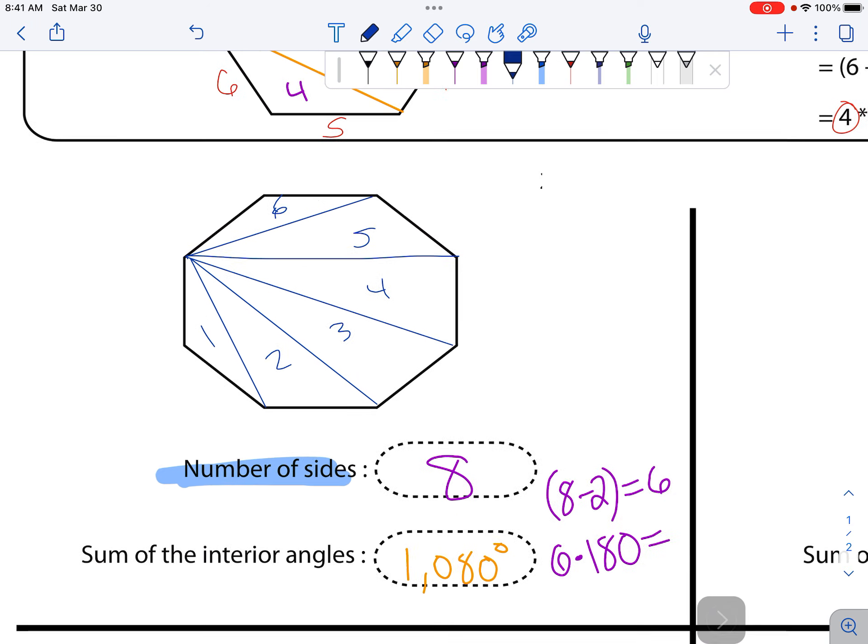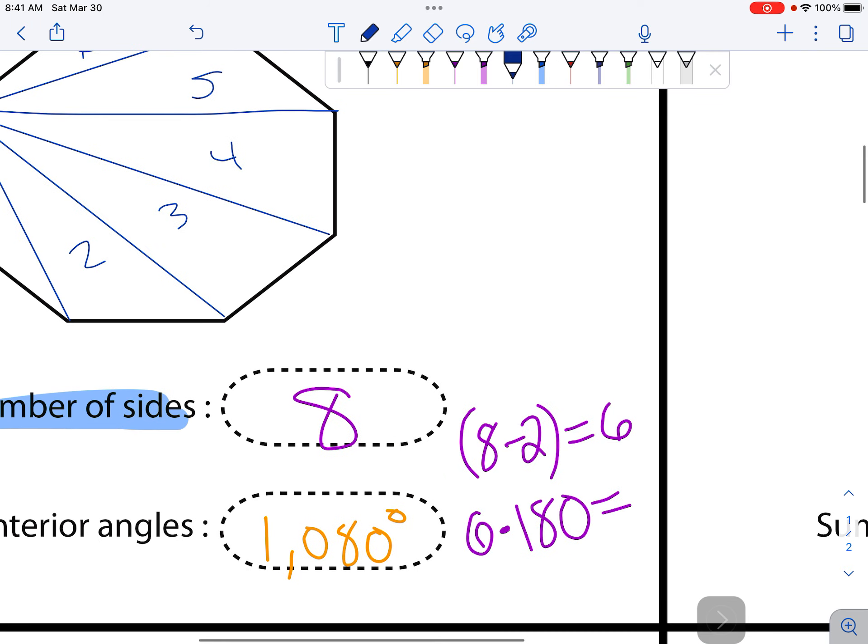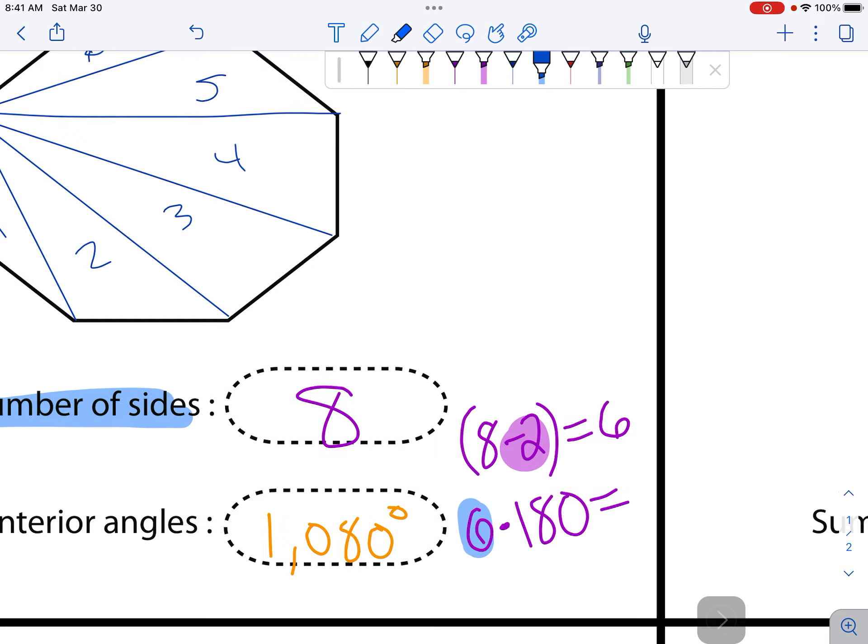So anytime you know how many sides there are, you take that and you minus 2, and then you take that number - so in this case 6 - and you times by 180 degrees.